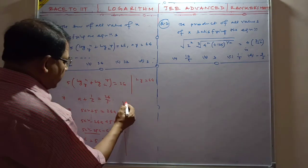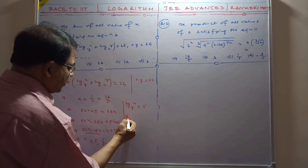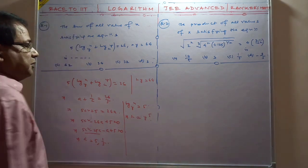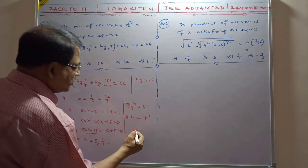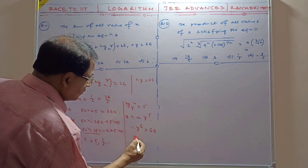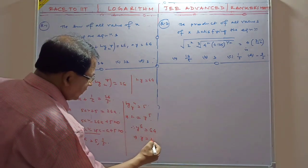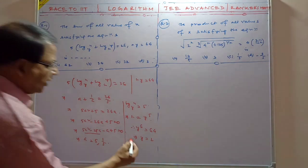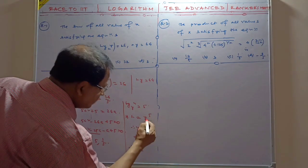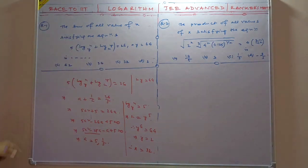So log_y(x) = 5, which means x = y⁵. Substituting into xy = 64: y⁵ · y = y⁶ = 64. There is no possibility of y being negative, so y = 2. Therefore x = 2⁵ = 32.